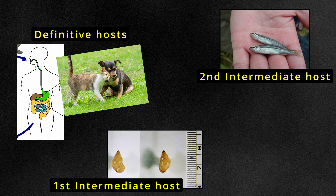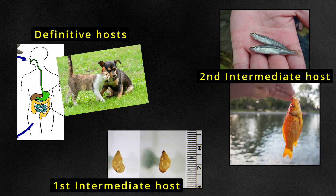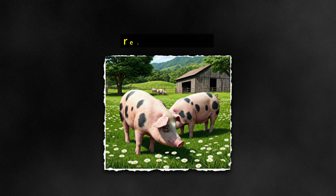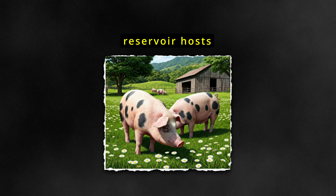Molecular techniques have revealed that freshwater goldfish, or Carassius auratus, a commonly overlooked host, can also harbor Clonorchis and Opisthorchis larvae, which could further increase the risk of human infections. Omnivores, such as pigs and other domesticated animals, have been identified as reservoir hosts in some areas, contributing to the persistence of the parasite in human populations.